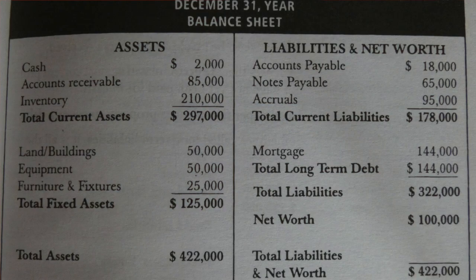The total assets — the sum of current assets and fixed assets — is $422,000. Now let's look at liabilities and net worth. As you know, assets equals liabilities plus net worth, so the equation should satisfy. Accounts payable is $18,000, goods payable is $65,000, and accruals is $95,000. Accruals is the additional expense the company has not yet paid in cash — similar to accounts payable, but owed to someone other than the supplier.